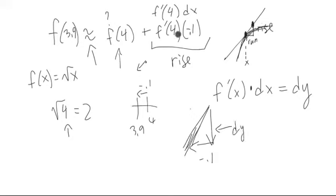Let's compute the derivative of f of x. We can think of this as being x to the 1/2. Then that becomes 1/2 x to the negative 1/2 as the derivative, or 1 over 2 times root x.